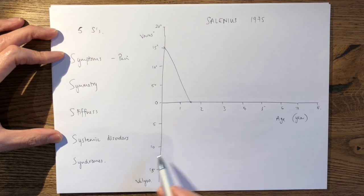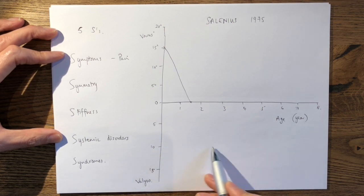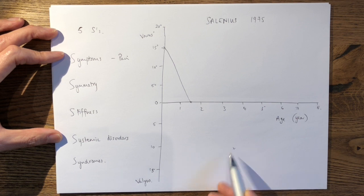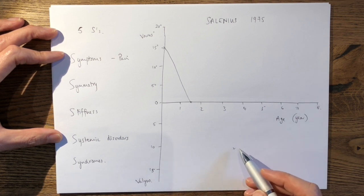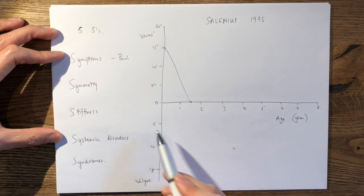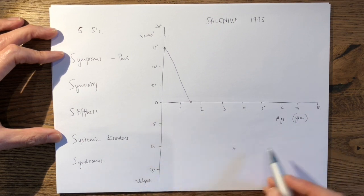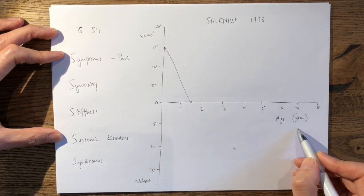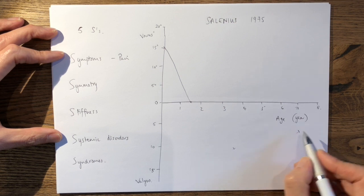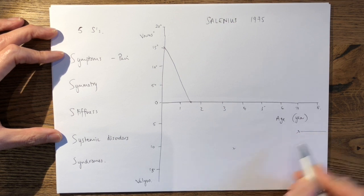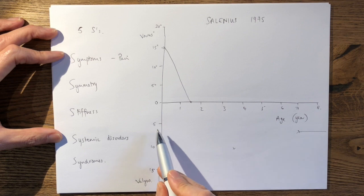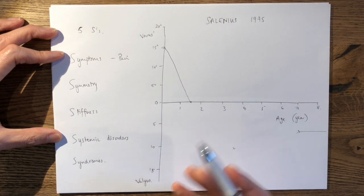They'd then reach a maximal valgus angle of approximately 10 degrees at about 3 to 4 years of age, so here. And then they would reach physiological valgus at 5 to 7 degrees, all the way up to 7 years of age, so about there. And then they would plateau to adulthood, where they'd still exhibit 5 to 7 degrees of physiological valgus.